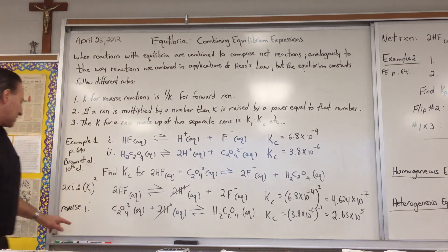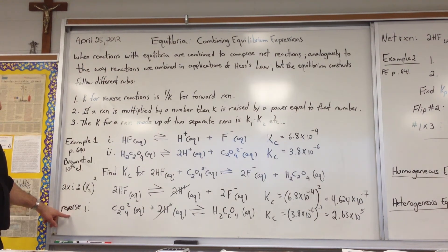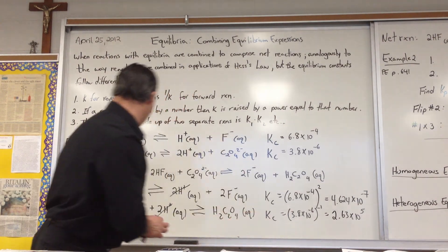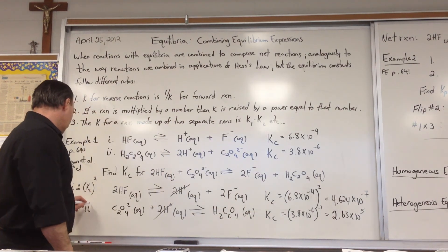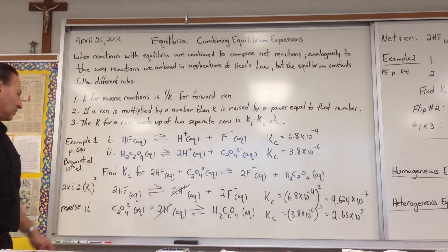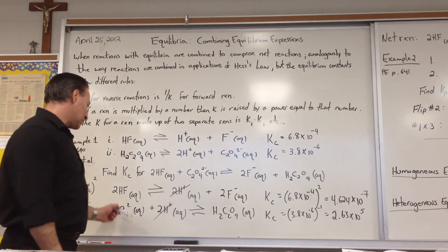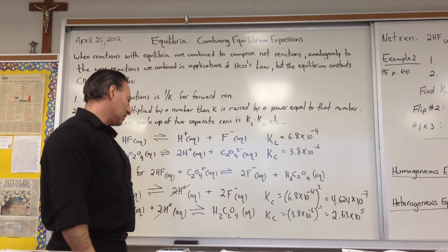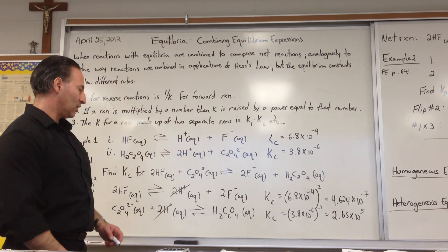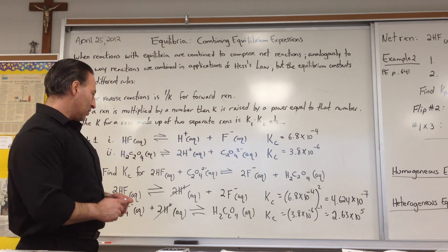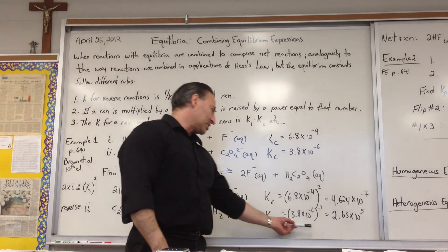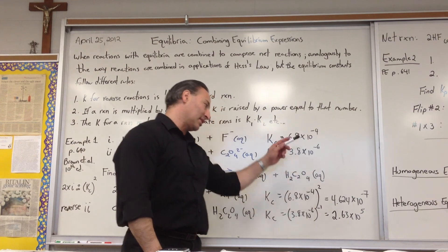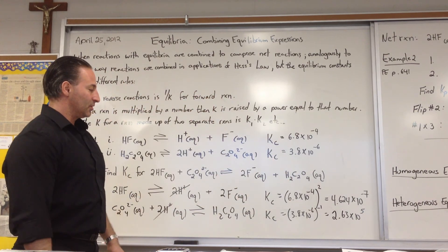And the second step is to reverse the second reaction, reaction number two. So I want the oxalate anion on this side, and it gives you two protons and then you show the undissolved oxalate. And when you reverse the reaction, you take the reciprocal of the number. Notice how I put this to the power of minus one. It's like saying one over X of the original number.